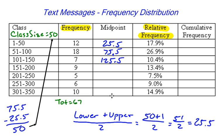So I can just continue to add 50 to get the rest of my midpoint. So if I take 125.5 plus 50, I get 175.5. And then 175.5 plus 50 is 225.5. And then 275.5. And finally, 325.5. And that's how we can find our midpoints, which is a part of our expanded frequency distribution.